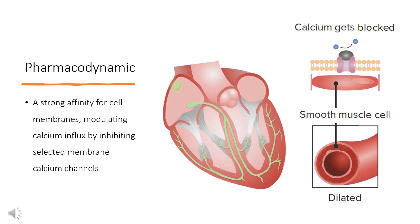Diltiazem is an antihypertensive and vasodilating agent that works by relaxing the vascular muscle and reducing blood pressure. This is related to the long-term therapeutic effects, as lowering the blood pressure reduces the risk of fatal and non-fatal cardiovascular events, primarily strokes and myocardial infarctions. Diltiazem inhibits the influx of extracellular calcium ions across the myocardial and vascular smooth muscle cell membranes during depolarization. Diltiazem is classified as a negative inotrope (decreased force) and negative chronotropic (decreased rate).